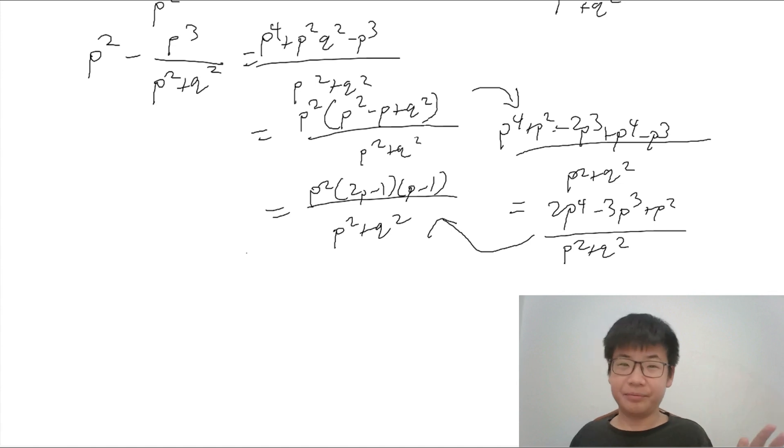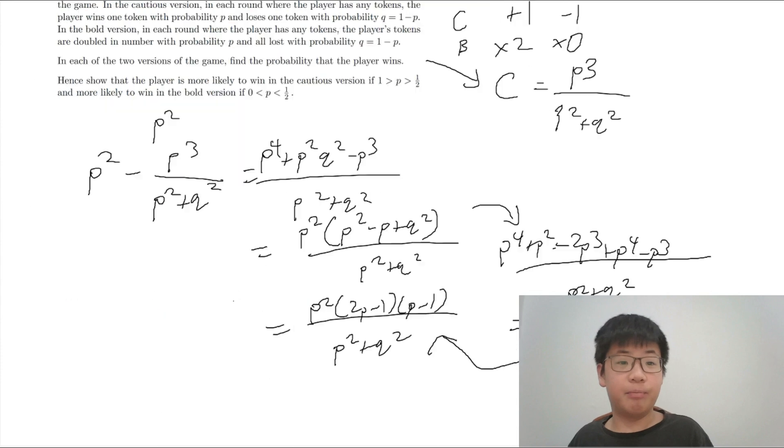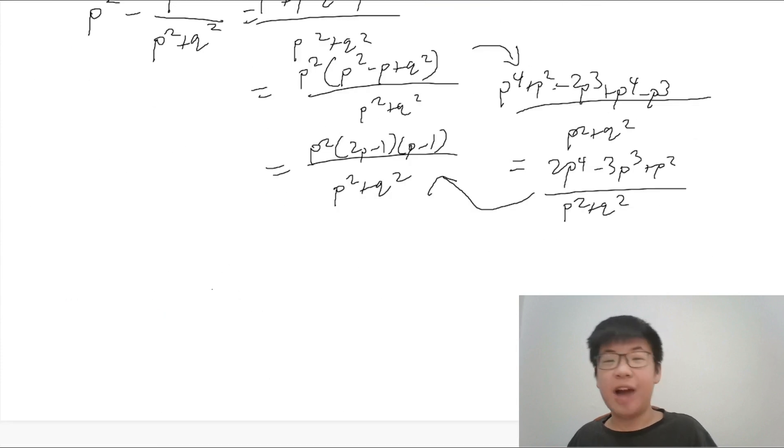So, if 2P minus 1 is greater than half, then it is positive, and so it is more likely to win in the cautious version. However, if P is less than half, then 2P minus 1 will be less than 0, and it will be more likely to win in the bold version. Now, do you understand why?